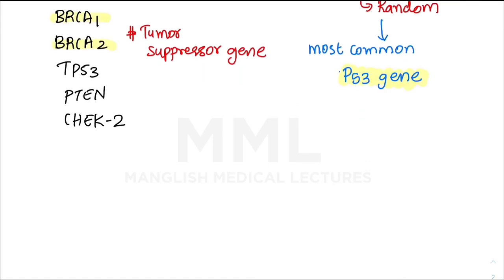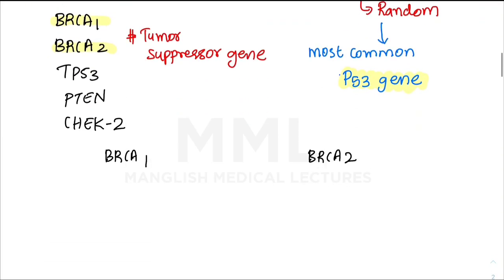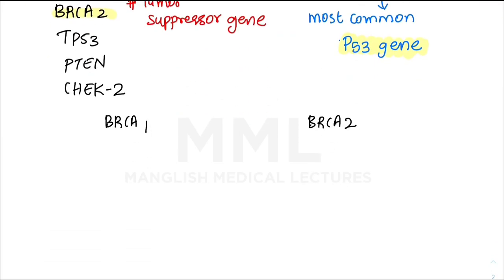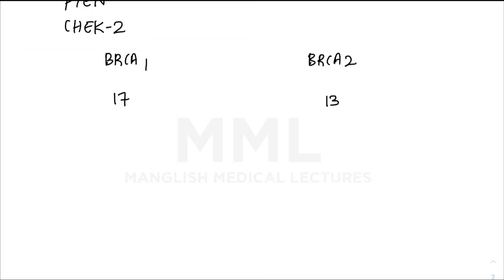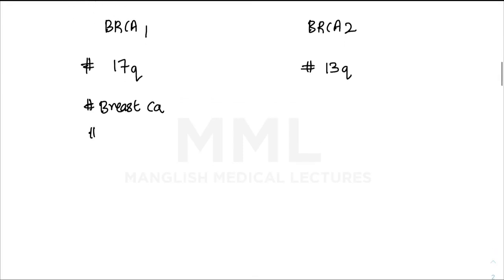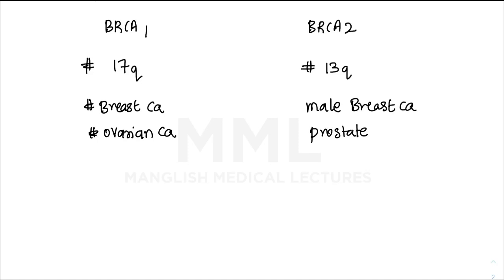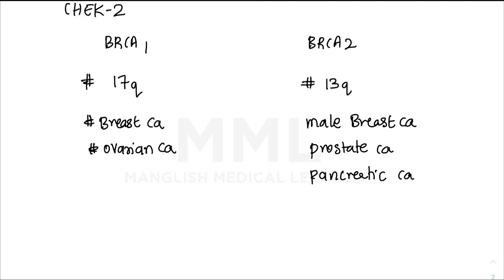Let's briefly discuss BRCA1 and BRCA2. BRCA1 is located on chromosome 17 and BRCA2 on chromosome 13. BRCA1 mutations cause breast cancer and ovarian cancer. BRCA2 mutations cause male breast cancer, prostate cancer, and pancreatic cancer.